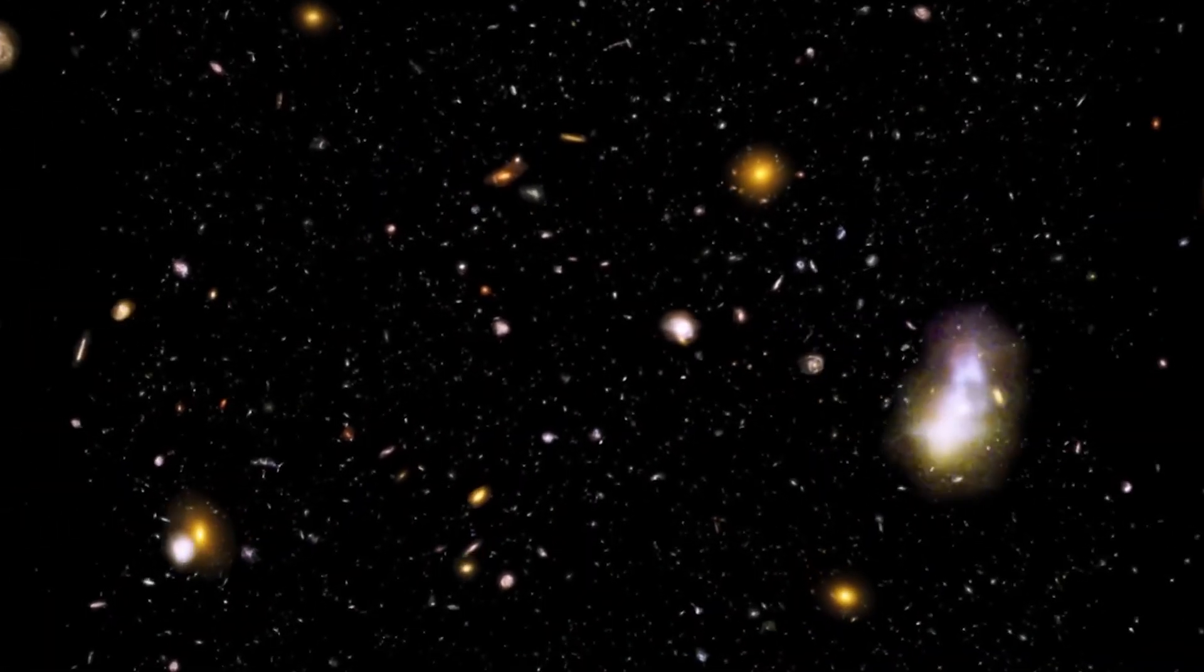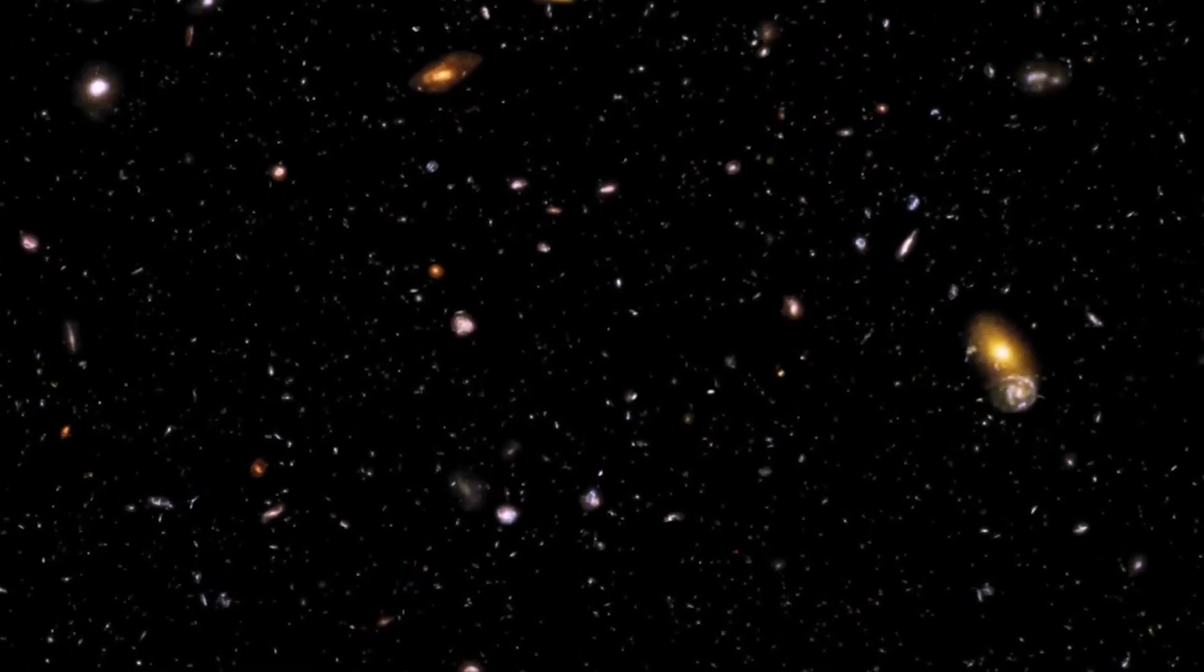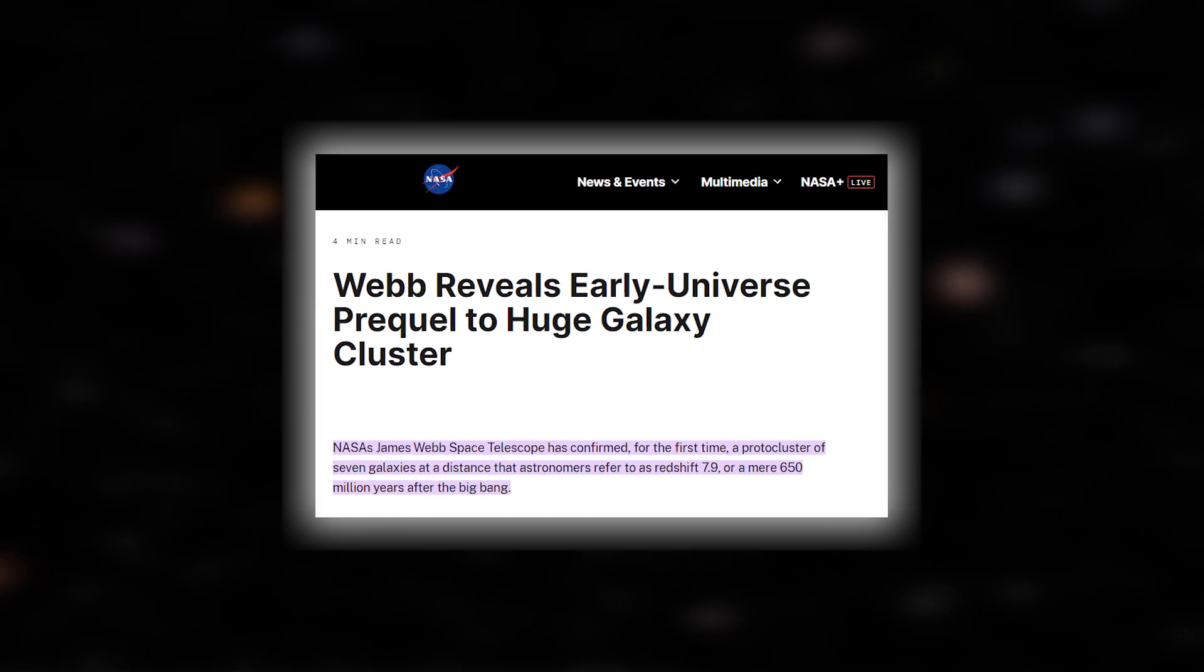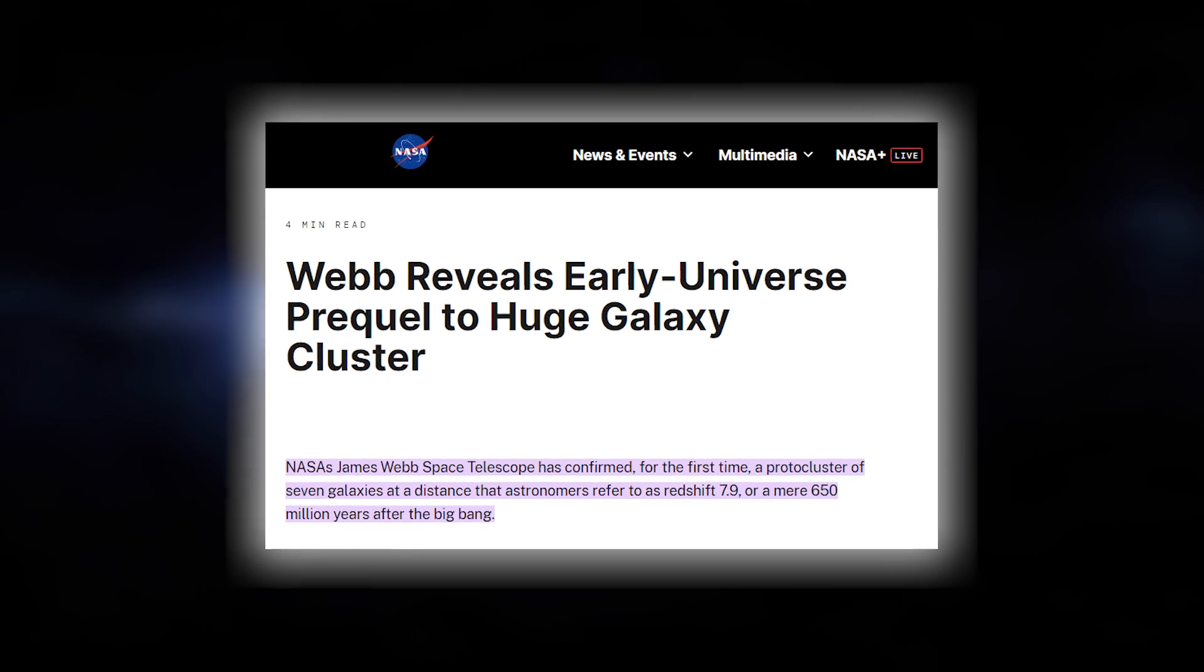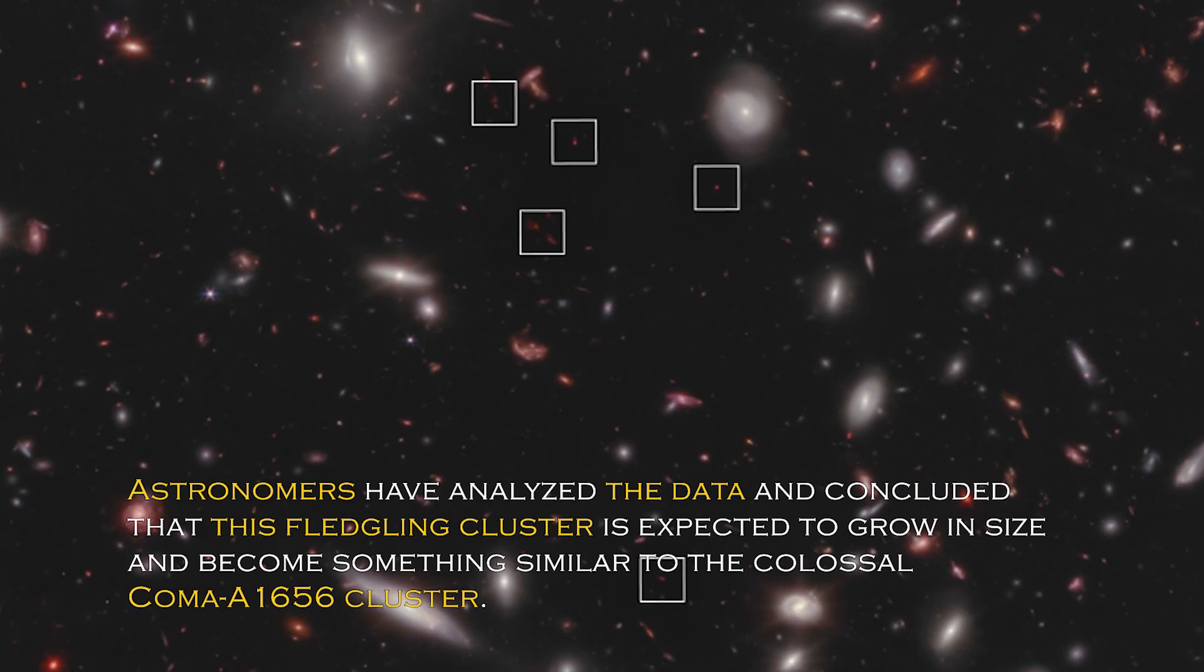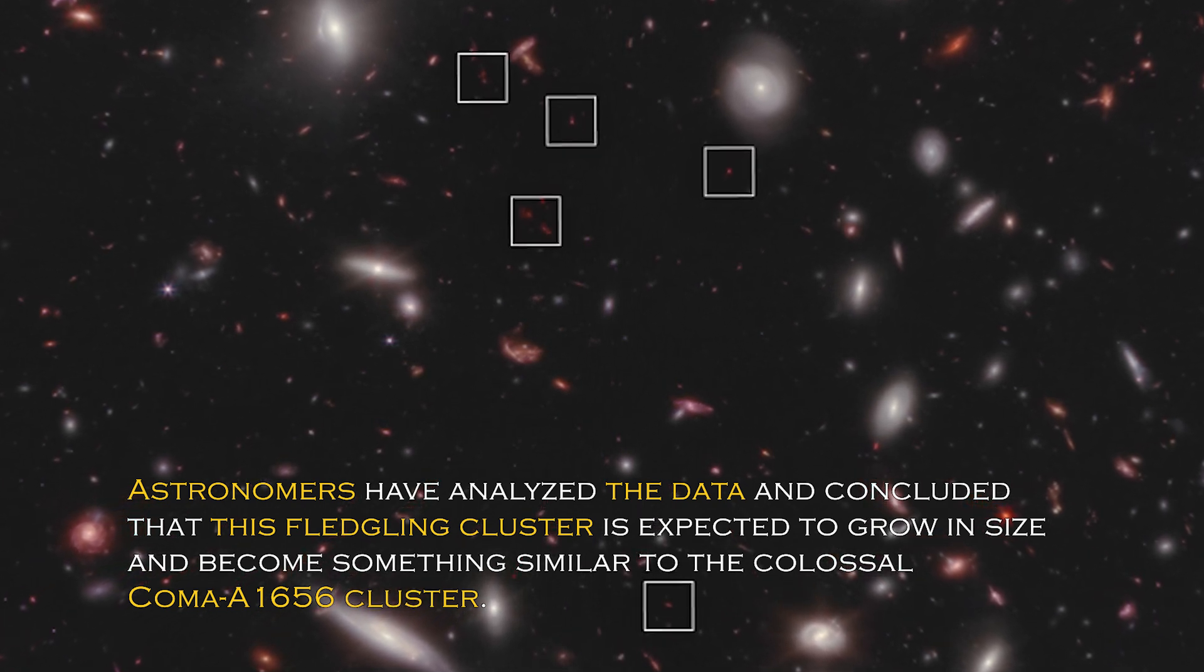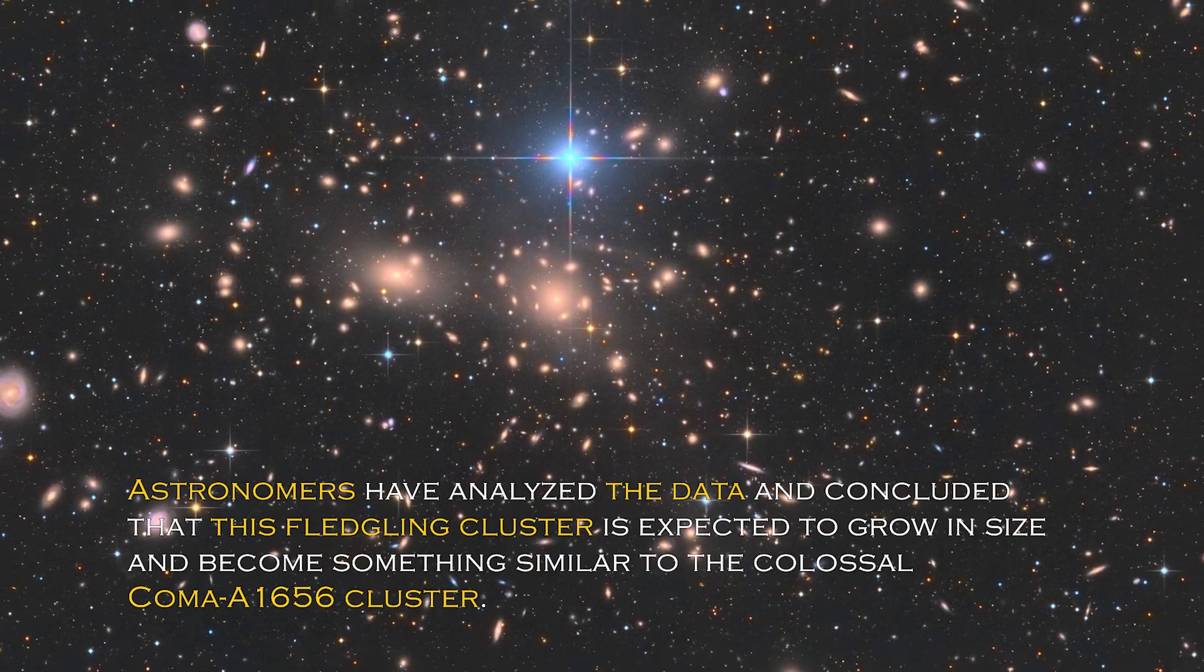Findings from the James Webb Space Telescope challenge what we thought we knew about the Big Bang, leaving scientists at a crossroads. Despite this, NASA recently tweeted about a galaxy cluster that lies just 650 million years after the Big Bang, adding another intriguing piece to the puzzle. Astronomers have analyzed the data and concluded that this fledgling cluster is expected to grow in size and become something similar to the colossal Coma A1656 cluster.